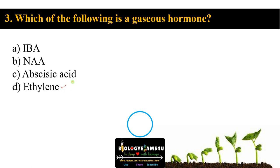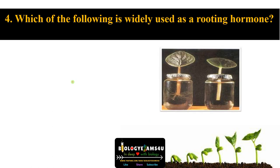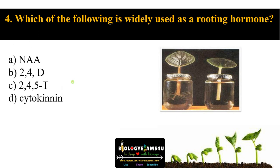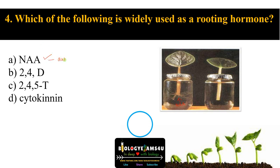Question number four: which of the following is widely used as rooting hormone? Options are NAA, 2,4-D, 2,4,5-T, and cytokinin. The answer is naphthalene acetic acid (NAA). You can see the rooting in NAA-treated plants versus those without NAA treatment. NAA is a synthetic auxin.